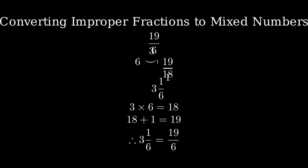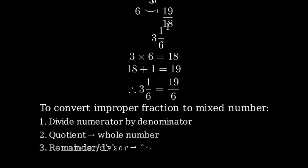So our mixed number is correct. So remember, to convert an improper fraction to a mixed number, first divide the numerator by the denominator. The quotient becomes your whole number, and the remainder over the divisor becomes the fraction.